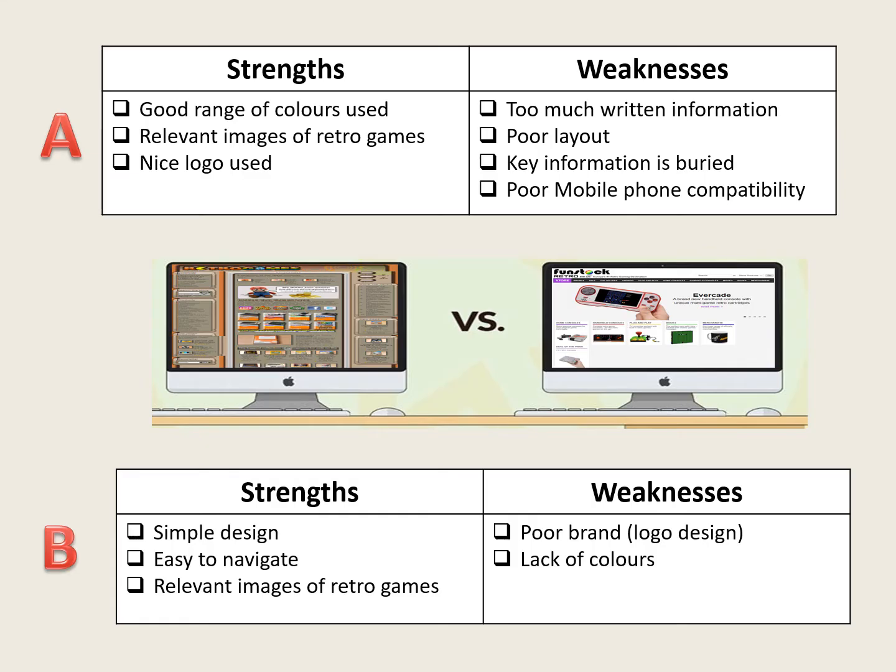Here are the answers. For interface A, the strengths are that there's a good range of colours, there are relevant images of retro games — you can see there's a picture of Mario — and there's a nice logo at the top of the page. The weaknesses, however, are that there's too much written information, a poor layout, the key information is buried and hard to find, and unfortunately this means poor mobile phone compatibility, so it wouldn't look good on a smartphone.